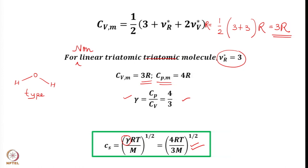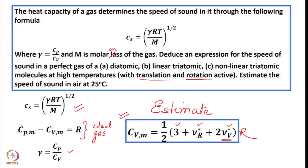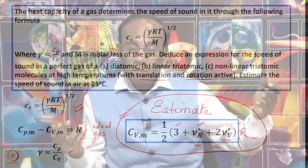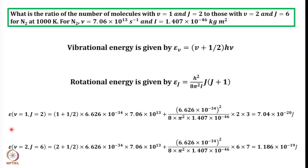To solve these kinds of problems, the key is to remember the expression for Cv, which depends on temperature. If temperature is high enough for all rotational modes to be active, substitute the value of ν_R*. If temperature is not high enough for vibrational modes, ν_V* = 0; but if they are active, substitute the number of fully active normal modes. This example illustrates how to obtain an estimate of heat capacity at constant volume.